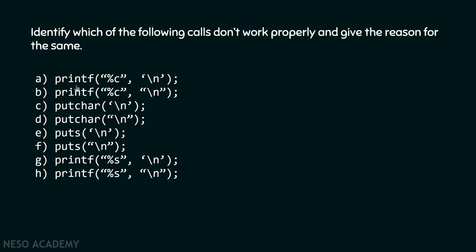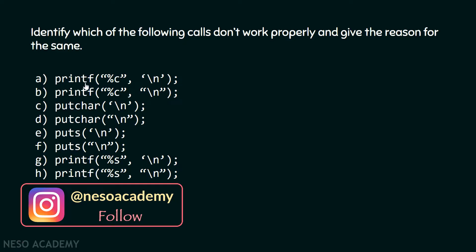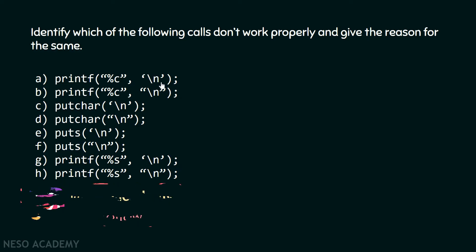I hope you are done. In the first call we have a printf function and we are passing the first argument as %c and the second argument is backslash n — that is a character enclosed within single quotes. If a character is enclosed within single quotes it is treated like a character, but if enclosed within double quotes it is treated like a string. Here we are expecting a character and we are also passing a character, so this printf function works properly.